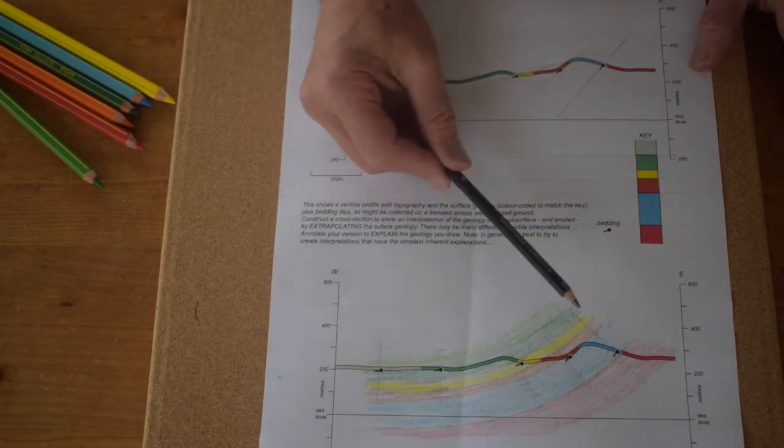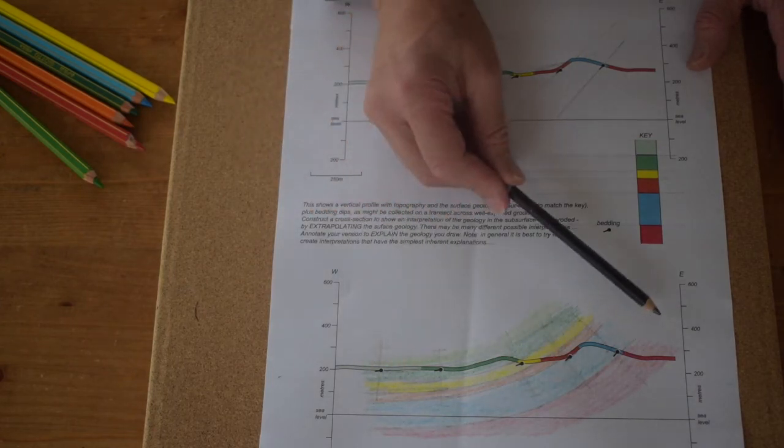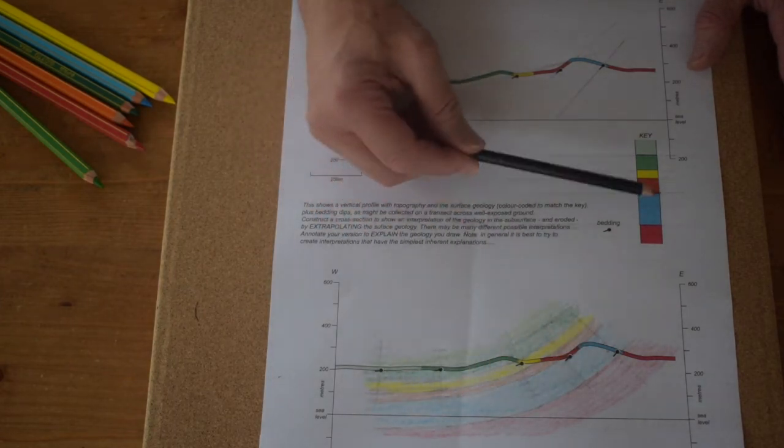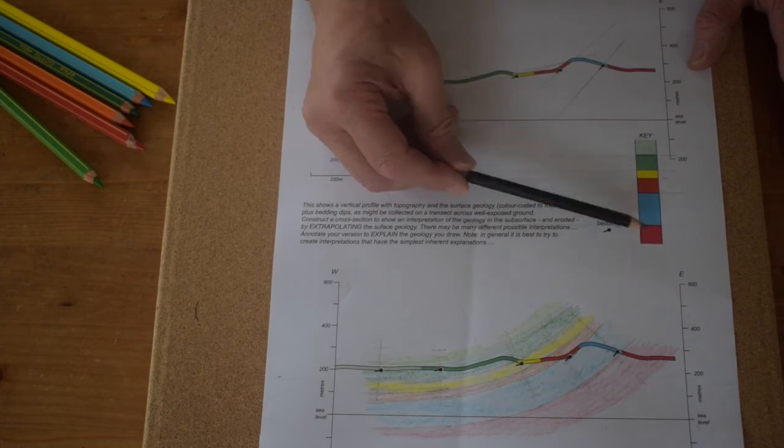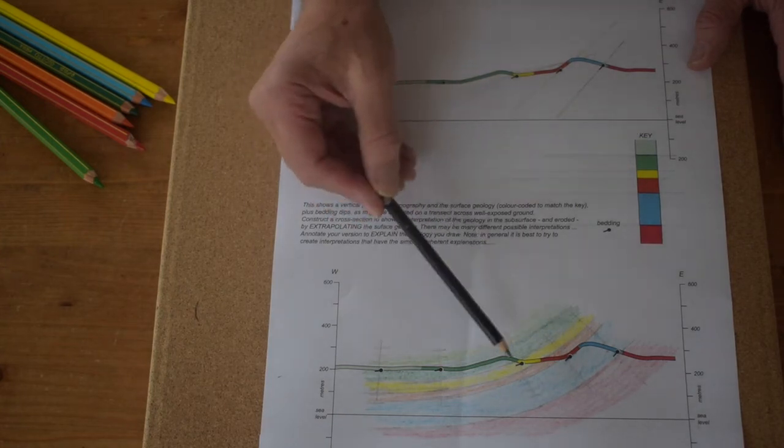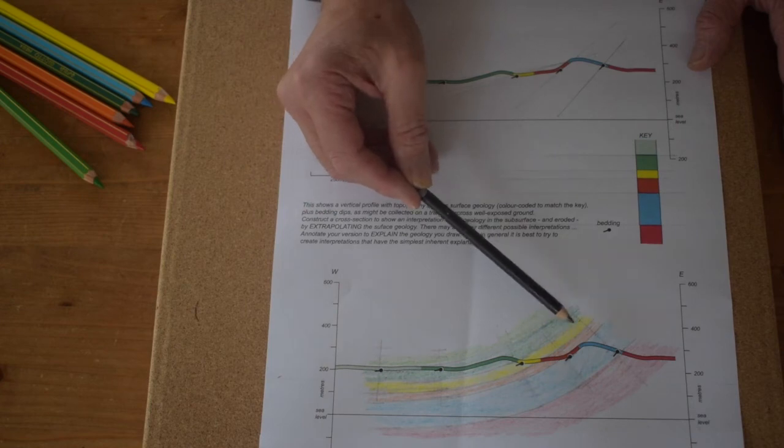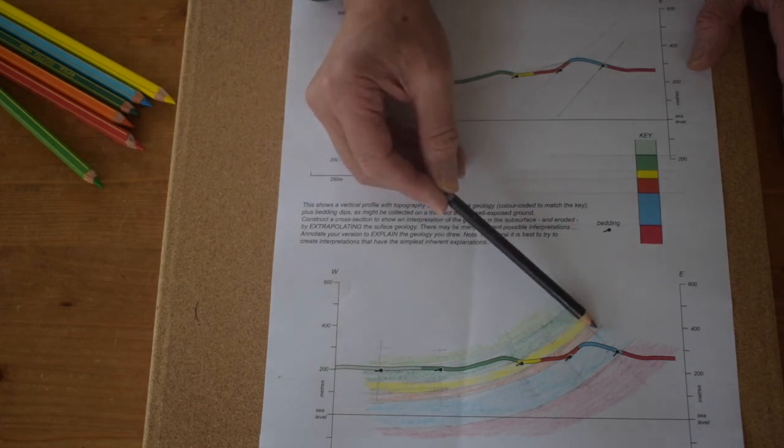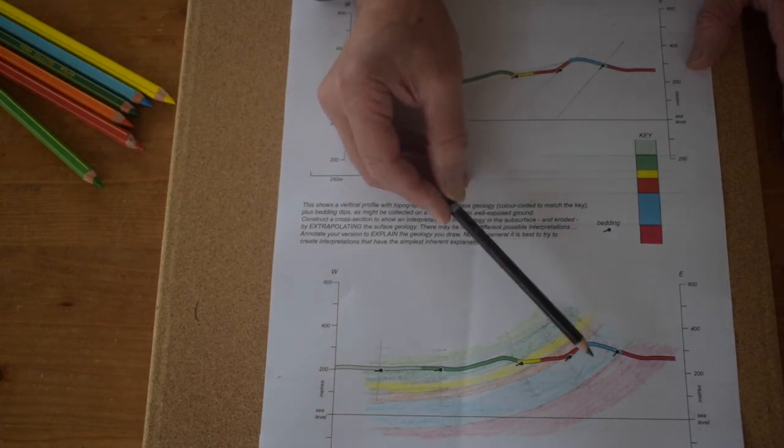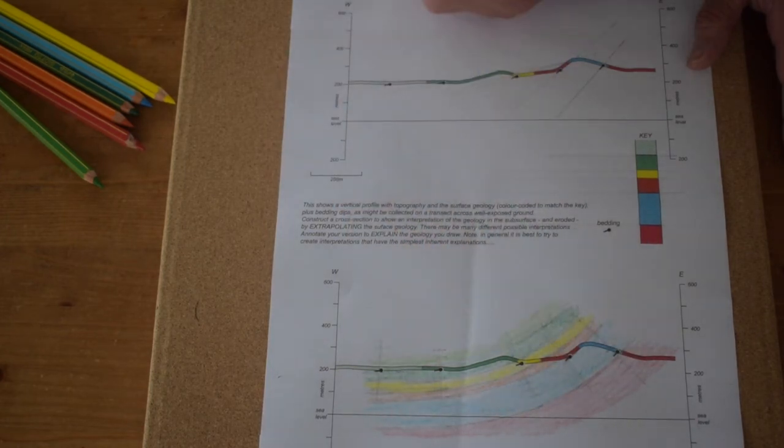So that's a better job I think. Basically it shows the rock units continuing. They obey the stratigraphic relationships we see in the key. So that we're inferring the light green always sits on top of the dark green and in turn on top of the yellow and in turn on top of the orange and in turn on top of the blue and finally on top of the red. And that occurs throughout the profile.